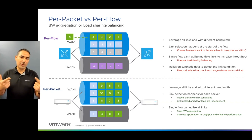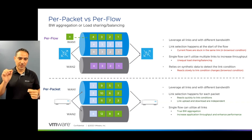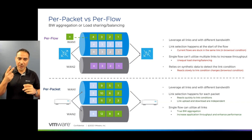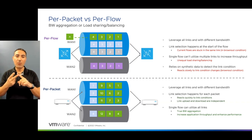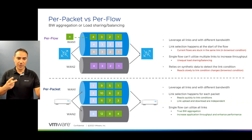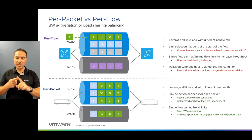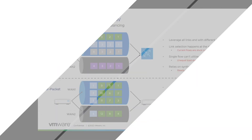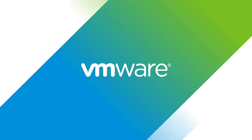In the next video, I'll be talking about the use cases. The key takeaway here is that we have two technologies: per-packet is the only one that gives true bandwidth aggregation and application performance improvement. Per-flow is useful because it leverages all transport circuits, but it does not provide application performance improvement. Thank you very much — please watch the second video.